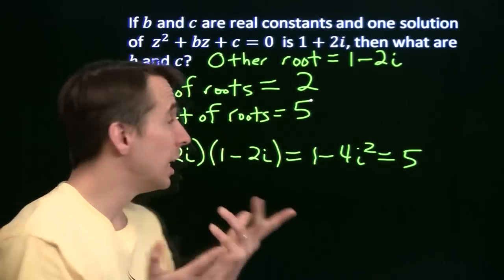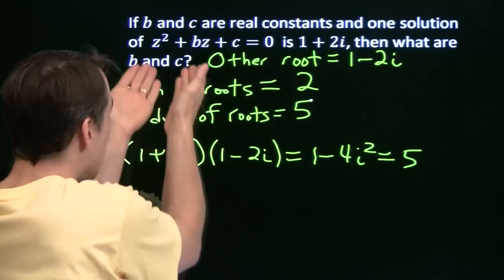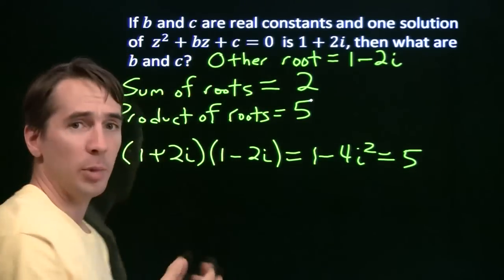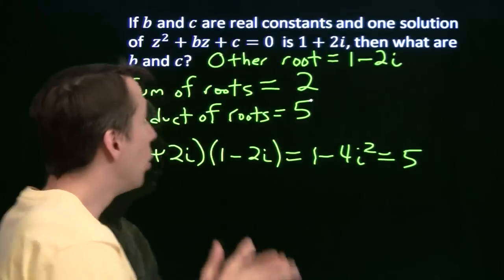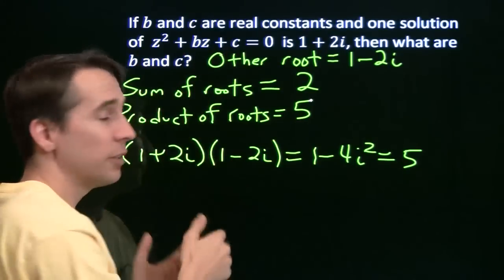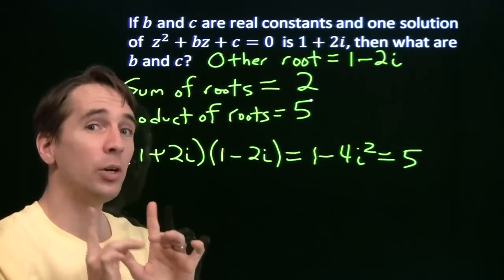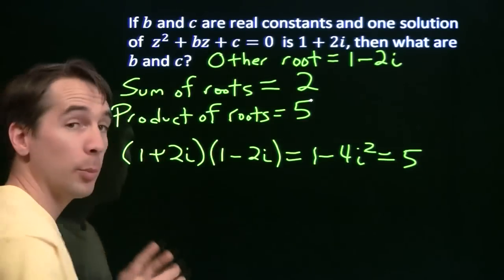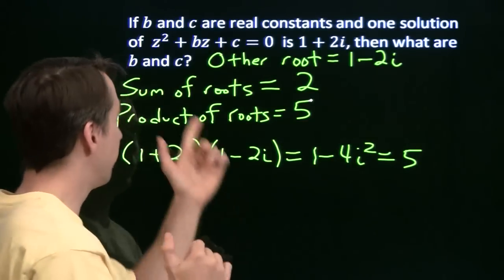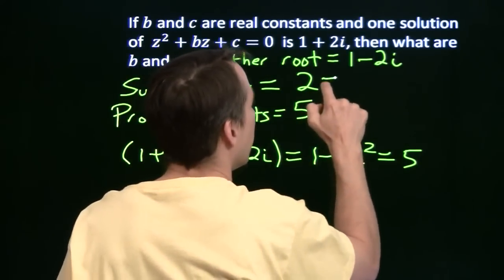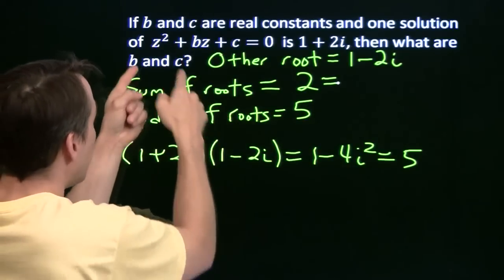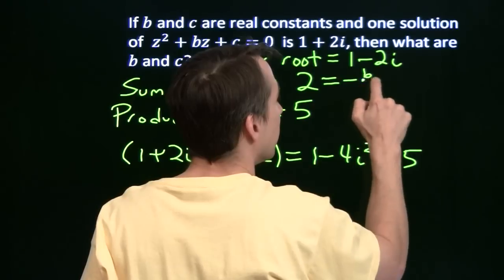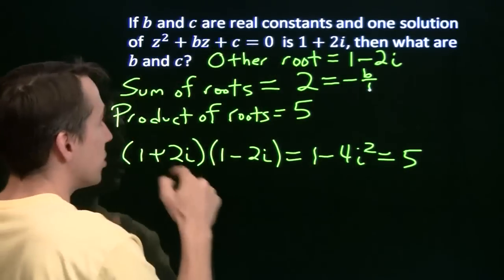Now remember, way back we learned the Vieta relationships — the relationships between the coefficients and the sum and product of the roots. Way back then we used the coefficients to figure out the sum and the product. Here we're going to go the other direction. We have the sum, we have the product, and now we're going to figure out what the coefficients are. Those relationships told us that the sum of the roots was negative b over a, and in this case a is just 1.